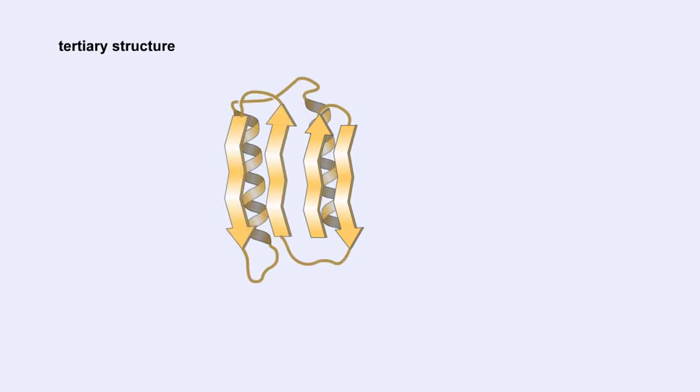Here, the polypeptide has several domains of helices and pleated sheets. The chemical nature of the side groups will determine the types of interactions between the regions of the folded polypeptide.